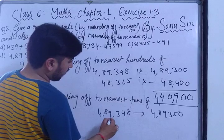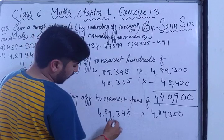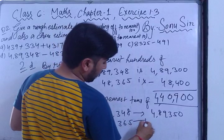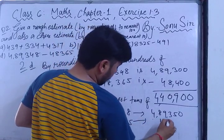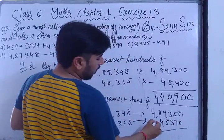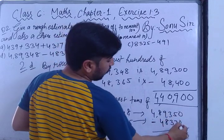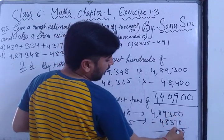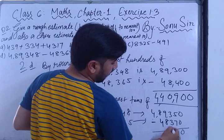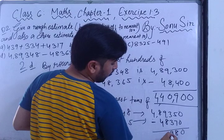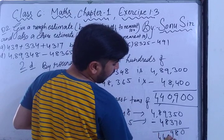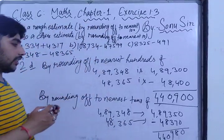Subtracting 489350 minus 483660: borrowing as needed, the answer is 5690.